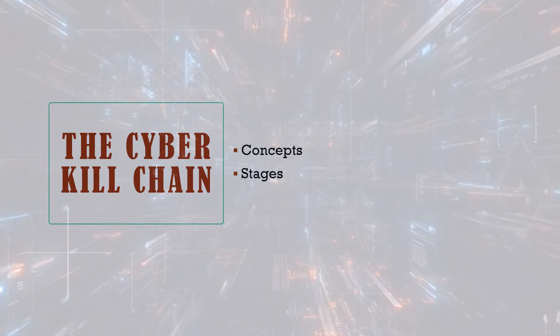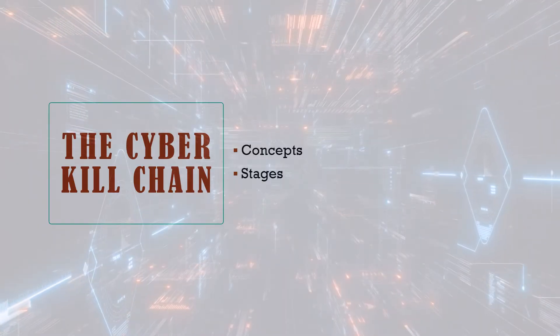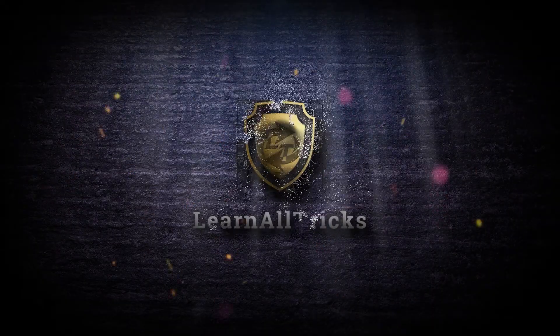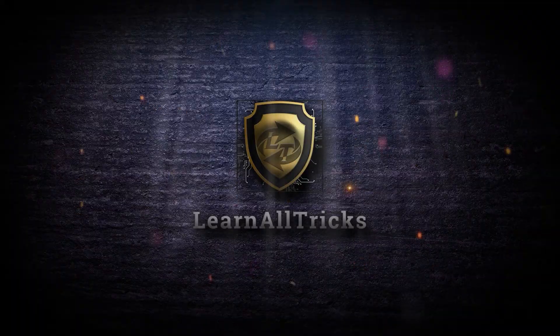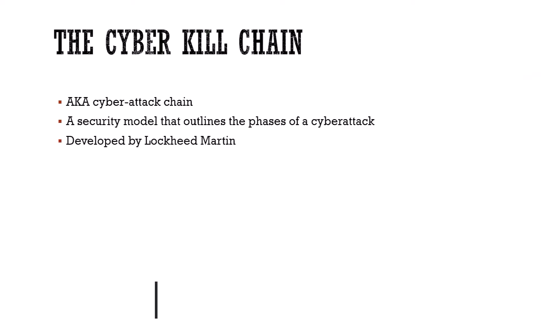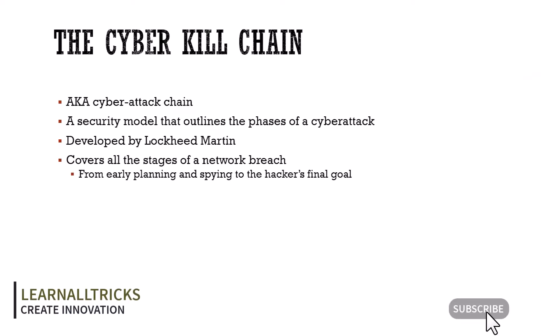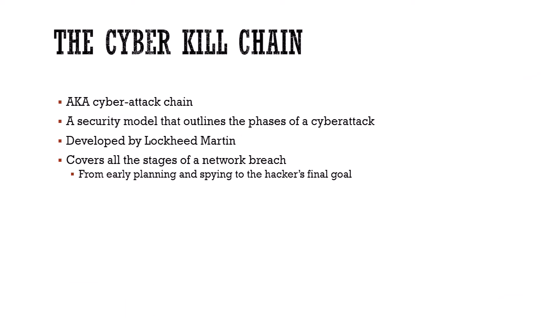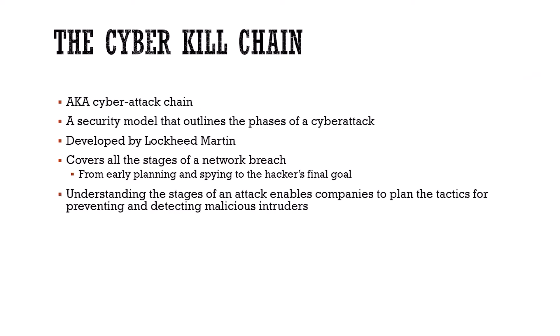There's a very cool term that we are now using in cybersecurity, and that is the cyber kill chain. This is also known as the cyber attack chain. It is a security model that outlines all the phases of a cyber attack. It was developed by Lockheed Martin, but they actually borrowed it from the military. It covers all stages of a network breach, from the early planning and spying to attaining our final goal. If you understand the attack stages, you can then plan your tactics to prevent and detect these malicious intruders.